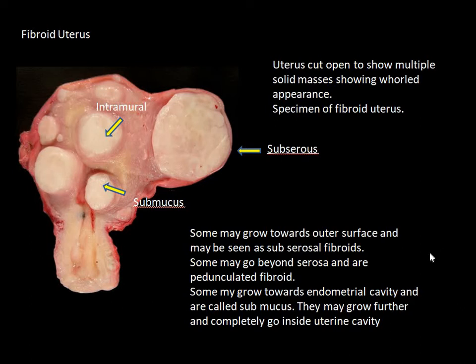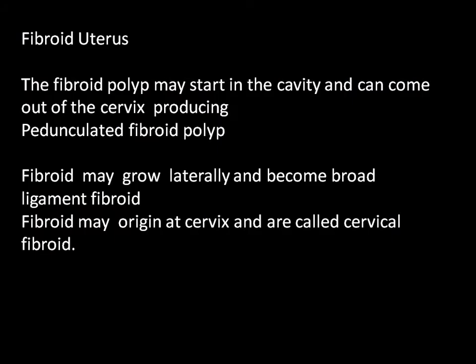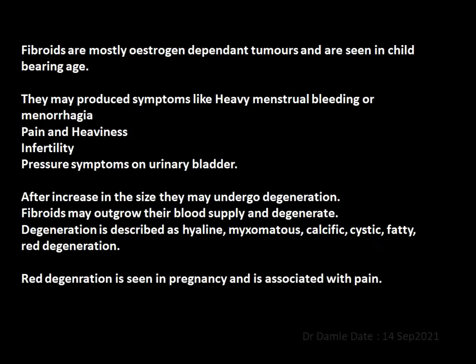Some may grow towards the outer surface. Some may go beyond the serosa and may become pediculated. Some may grow towards the endometrial cavity and become submucous. They may grow further and completely go inside the uterine cavity. The fibroid polyp may start in the cavity and can come out of the cervix, producing a pedunculated fibroid polyp. Fibroid may grow laterally and become a broad ligament fibroid. Fibroids may originate at the cervix and are called cervical fibroids. Fibroids are mostly estrogen-dependent tumors and are seen in childbearing age.